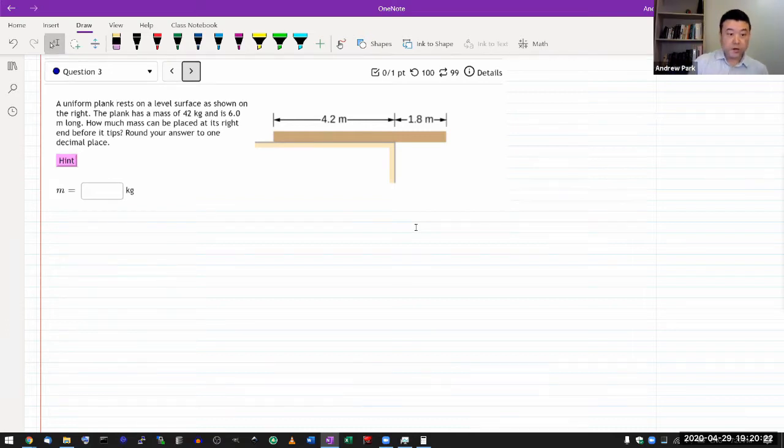So let me read the question here. A uniform plank rests on a level surface as shown on the right. I'm going to want to know the center of mass, so let me mark it somewhere here. The plank has a mass big M and it's 6 meters long, right? 4.2 plus 1.86.